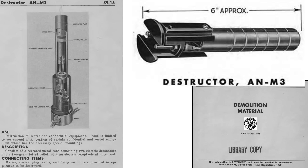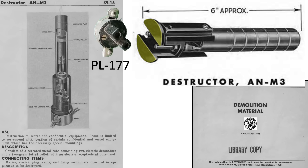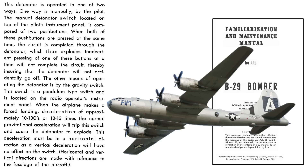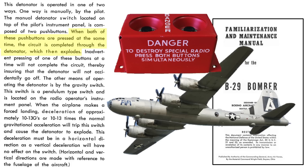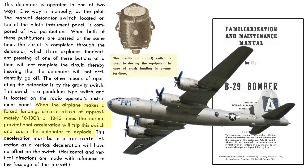Characteristics and an image of the M3 destructor are listed on a page from a 1944 demolition material document. It is 6 inches long and contains 2 grams of an explosive pellet. The PL-177 plug attaches here. The detonator can be activated by the pilot pushing the red safety box's spring-loaded buttons simultaneously as shown on the B-17, or it will also explode if the inertia switch experiences a longitudinal 10 to 13G load factor.